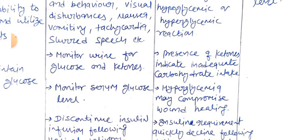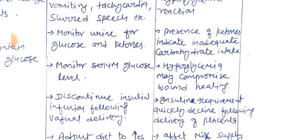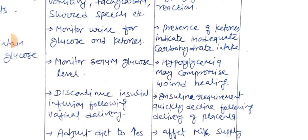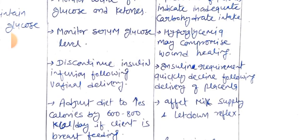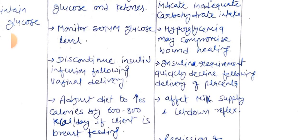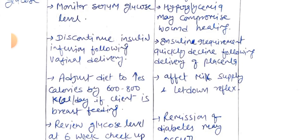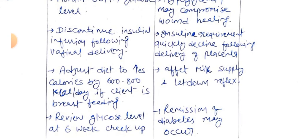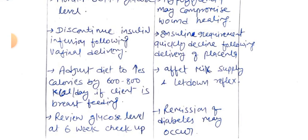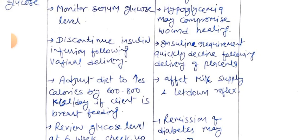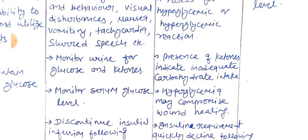Rationale for monitoring serum glucose: hyperglycemia may compromise wound healing. Next, discontinue insulin infusion following vaginal delivery — rationale: insulin requirements rapidly decline following delivery. Next, adjust diet to increase calories by 600 to 800 kcal per day if the client is breastfeeding to support milk supply and let-down reflex. Review glucose level at the six-week checkup — additional note: remission of diabetes may occur.